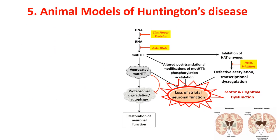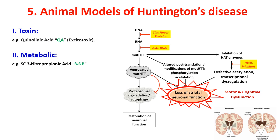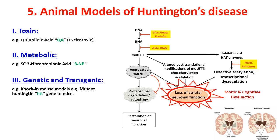The fifth model is Huntington's disease, aiming to destroy striatal neurons, leading to motor and cognitive dysfunction. First method uses kainic acid toxin causing excitotoxicity. Second method is metabolic via subcutaneous injection of 3-nitropropionic acid (3-NP), a well-known model we personally used in our department studying harmine. There are also genetic and transgenic models such as knock-in mouse models with mutant huntingtin gene in mice.